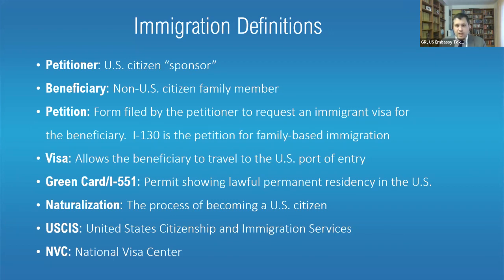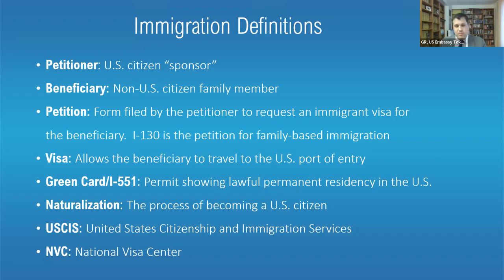The I-130 is what a U.S. citizen can use to sponsor a spouse, a child, or a parent to immigrate to the United States. Once that petition is approved, the beneficiary can apply for a visa. Those visas allow the traveler to go to the U.S. port of entry — usually the airport — and ask the Customs and Border Protection officer for admission. If you travel on an immigrant visa, you become what we call a lawful permanent resident and you get a green card. That's the informal term for a permanent resident — a card that shows you are authorized to reside, work, and live in the United States.